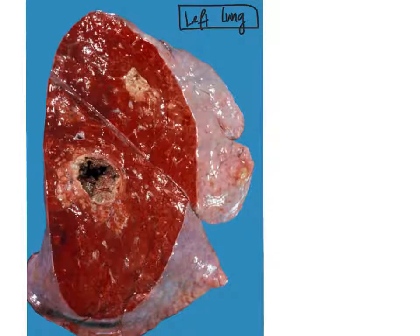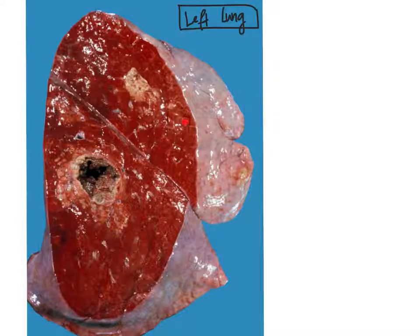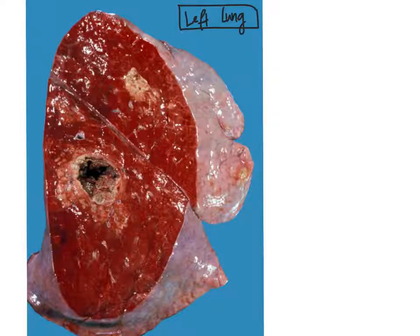So when we are looking for pathology, we always want to focus on whether this is a diffuse lesion that involves the entire lung, or is it a localized or discrete lesion that you can see in some areas or one area, and then there's normal appearing lung parenchyma in between.